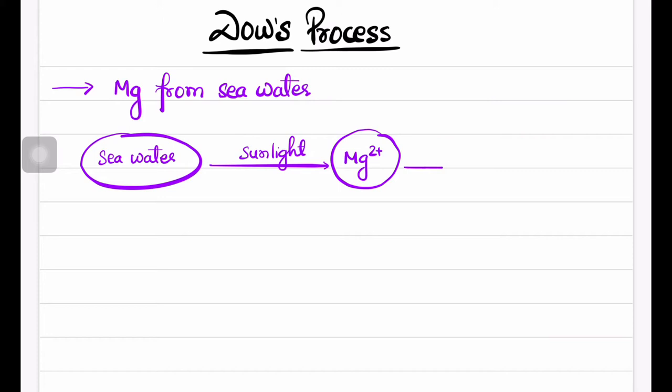Now we will treat that concentrate with slaked lime, which is Ca(OH)2. The Ksp value of Mg(OH)2 is very less - Mg(OH)2 is a sparingly soluble compound. So when we treat with Ca(OH)2, Mg(OH)2 will precipitate.